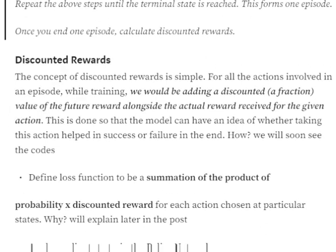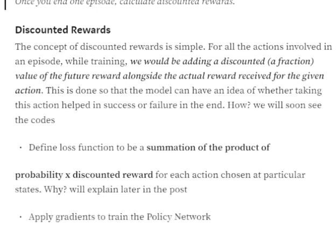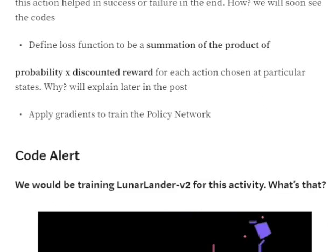We then define the loss function, which is a summation of the product of probabilities of each chosen action multiplied by the discounted reward for that action. We calculate this product for each action's probability and its discounted reward, add them all together, and then apply gradients to train the policy network.